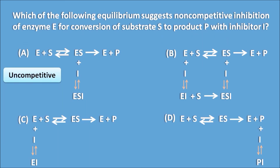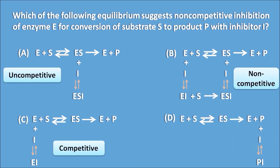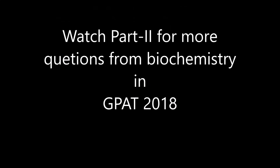Option A represents inhibition of the enzyme-substrate complex only, which is uncompetitive. Option C represents inhibition on the enzyme only, which is also classified as competitive. Option B represents inhibition on both the enzyme and the enzyme-substrate complex, which is non-competitive. Therefore, Option B is the right answer for this question.